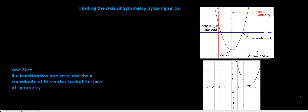Welcome to this presentation on finding the axis of symmetry by using zeros. So what we're going to look for is a vertical line that divides our parabola into two symmetrical halves.